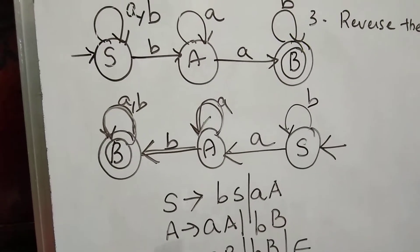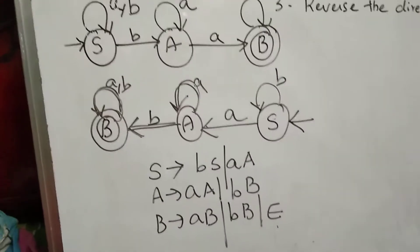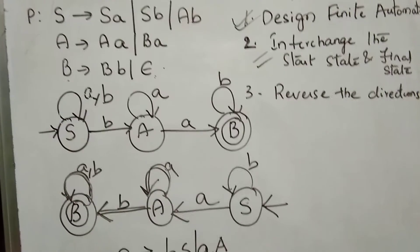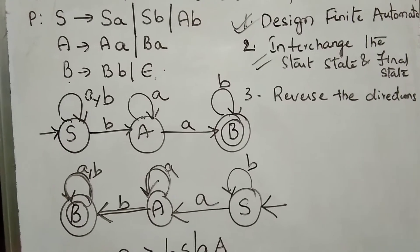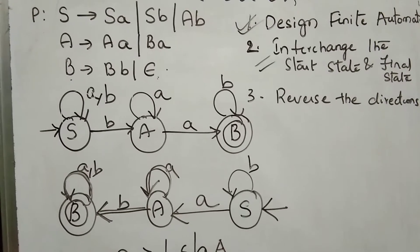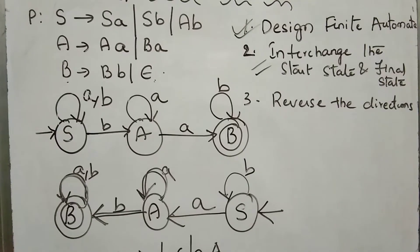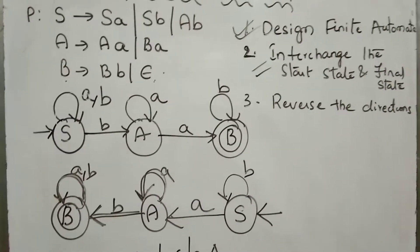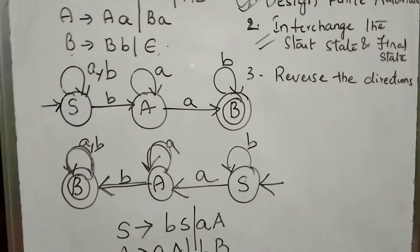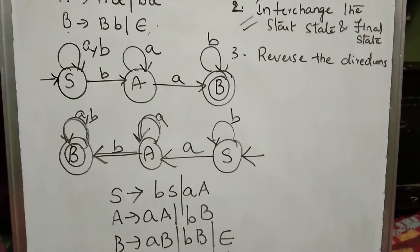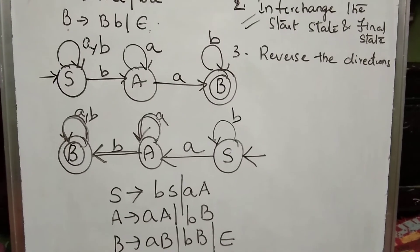The last state gets epsilon. That's it, we have converted it. Remember these rules: design finite automata for the given grammar, interchange start state and final states, and reverse the directions. In the previous video, we converted right linear to left linear. This is the same reverse procedure. So any left linear grammar can be automatically converted to right linear grammar. Thank you.